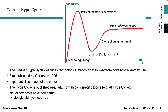So this is how it looks like. The Gartner Hype Cycle describes technological trends on their way from novelty to everyday use. It has been first published in 1995 and has been quite successful since then. The important thing is this curve — it's not a straight line from the lower left to the upper right corner. It's some kind of curve which goes up and down and up again. On the x-axis we have time — not in years, more a relative time. And on the y-axis you see the visibility of a certain technology.